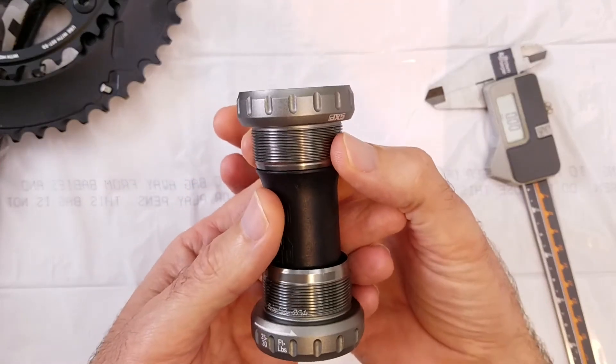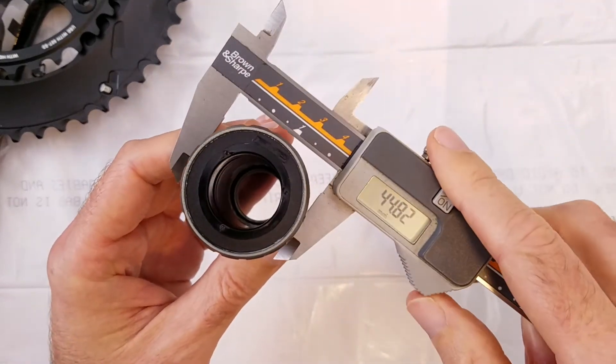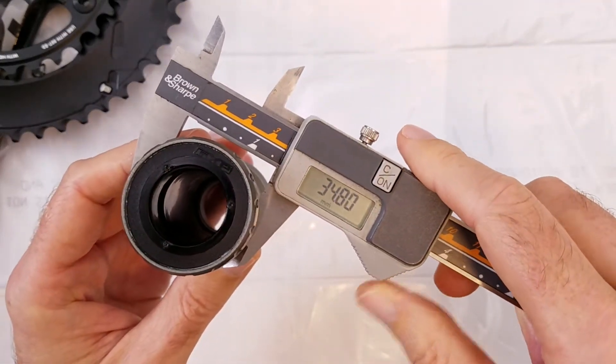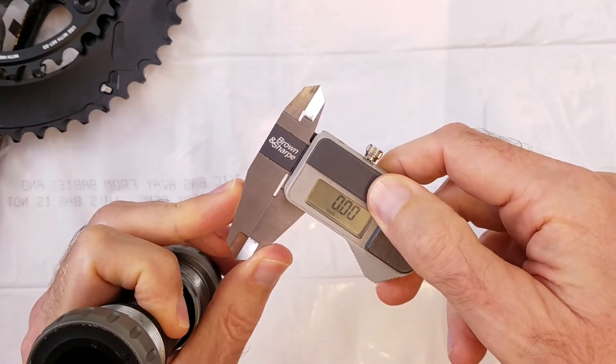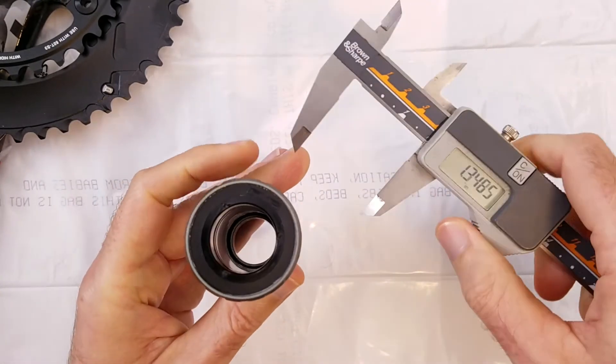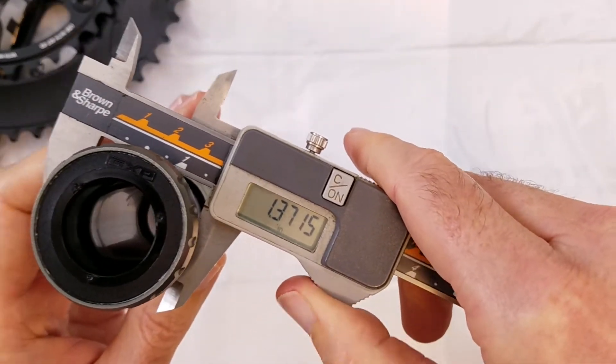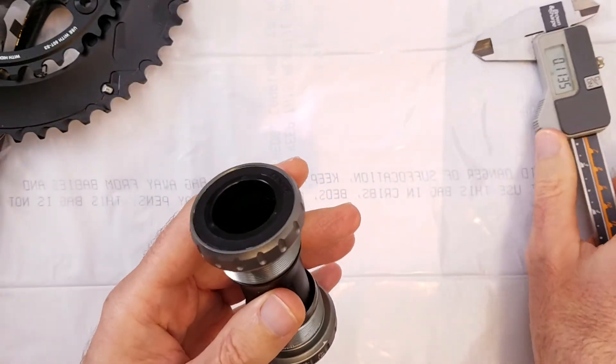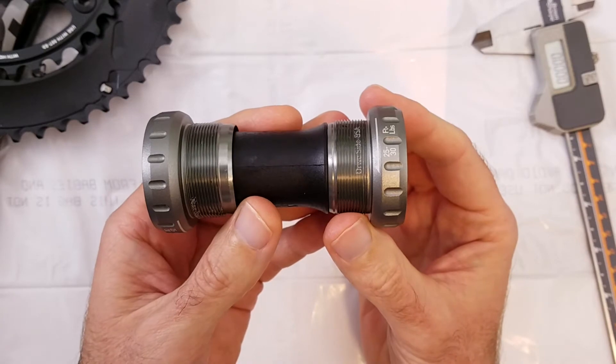So the diameter here is about 1.37 inches. Let me change this to inches. I haven't actually measured this but 1.37. And it has a thread pitch of 24 threads per inch.